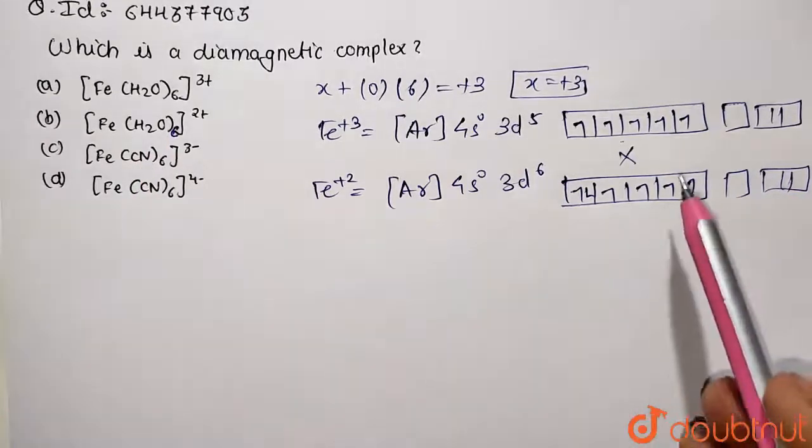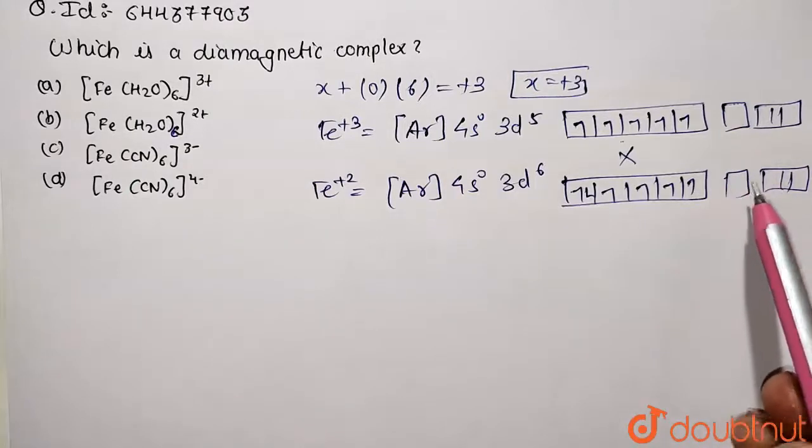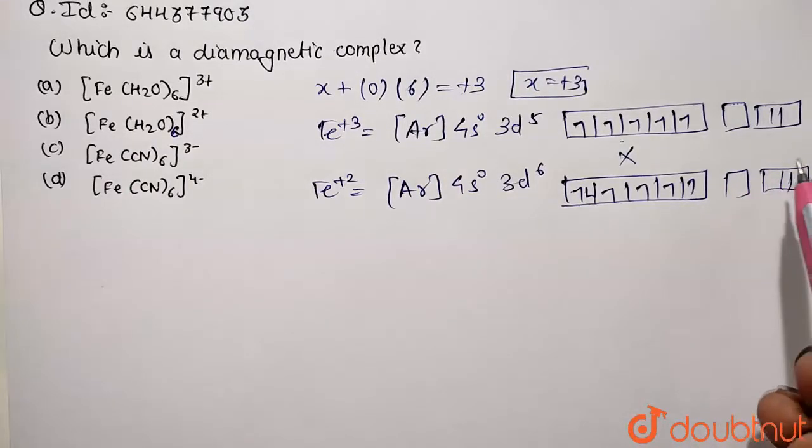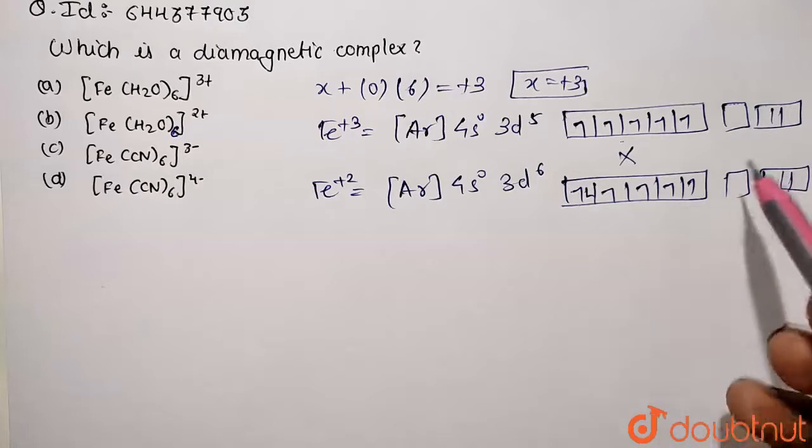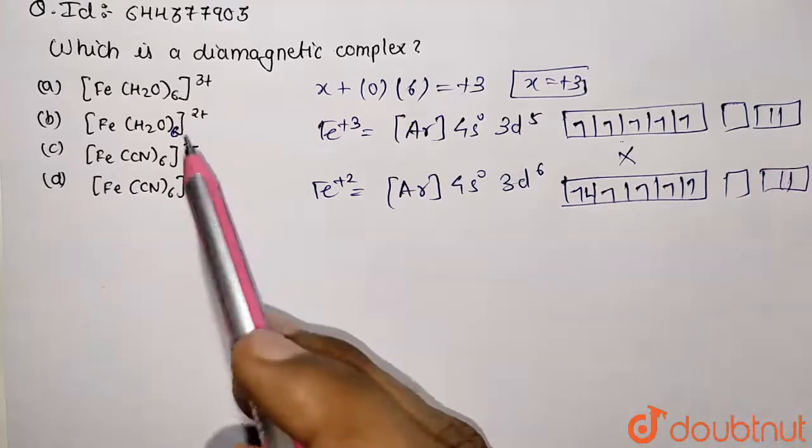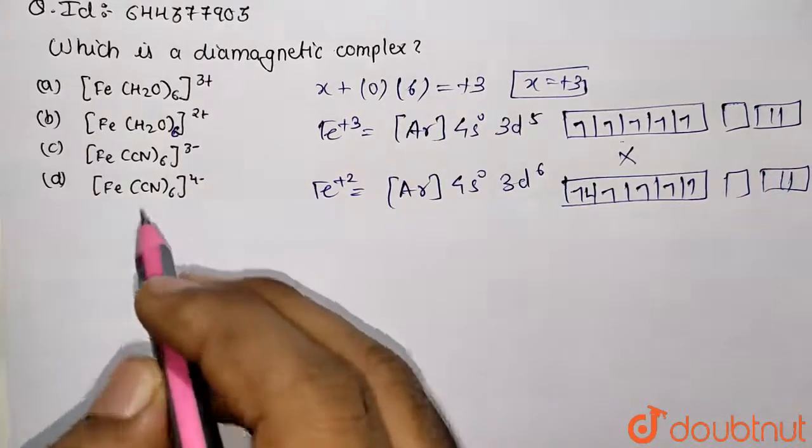So both of these are going to be octahedral complex so they are going to undergo external type of hybridization, that is sp3d2 type of complex which is outer orbital complex in both the cases because of weak field ligand. Now let's go with option C, which is